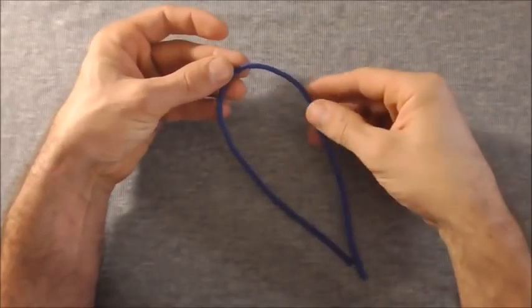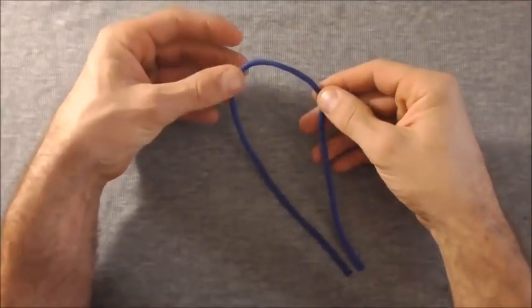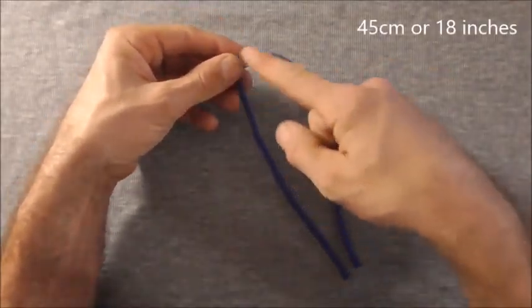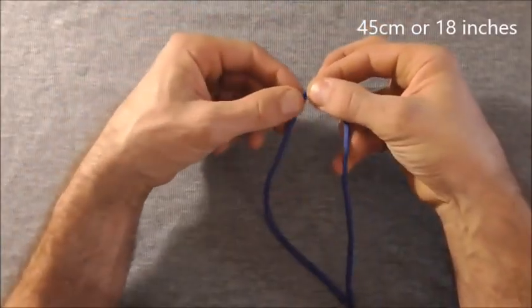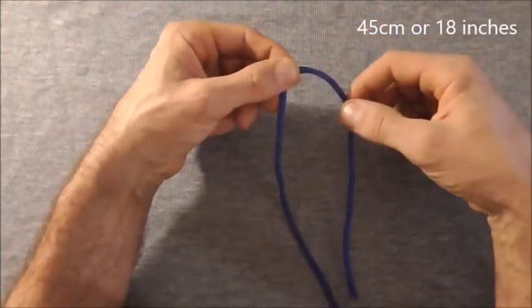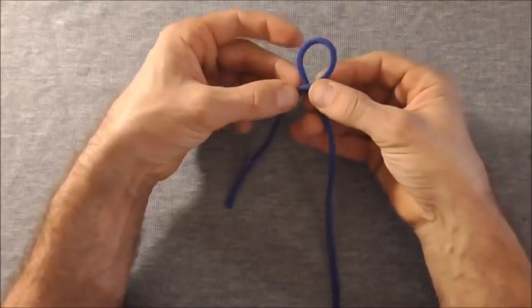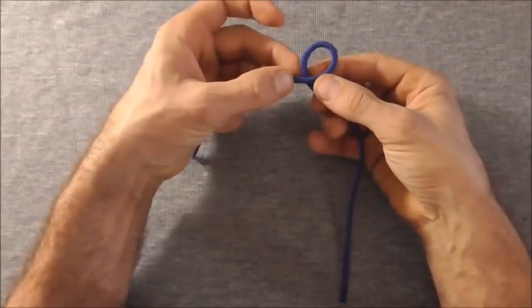To make these you just need a short piece of paracord. I'm using 45cm and to start it off I just want to find the center and then take this right hand strand over the left to form a loop at the top.